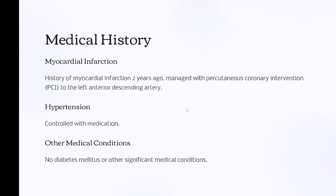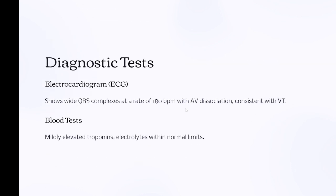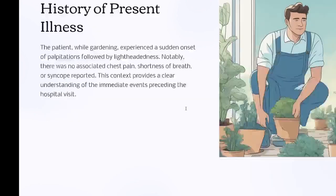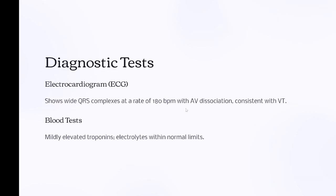Additional medical history: hypertension controlled with medication; no diabetes mellitus or other significant medical conditions. Family history: father had a history of coronary artery disease. Physical examination: vital signs BP 160 mmHg, HR 180 BPM, temp 37.0°C; cardiovascular examination shows rapid and regular heart rate with no murmurs, rubs, or gallops; respiratory clear bilaterally; neurologically alert and oriented. ECG shows wide QRS complexes at a rate of 180 BPM with AV dissociation, consistent with VT.